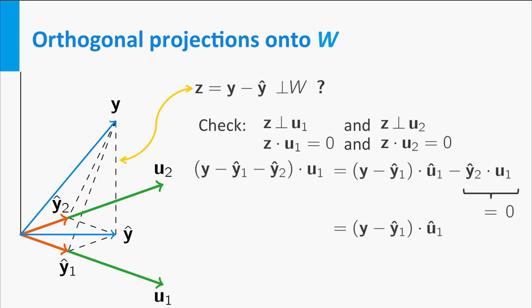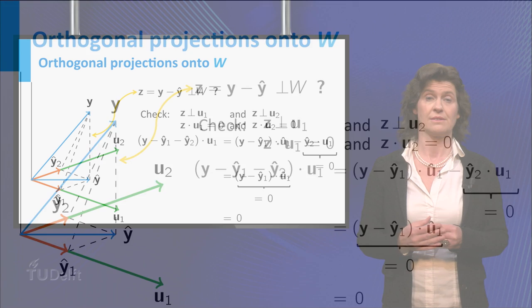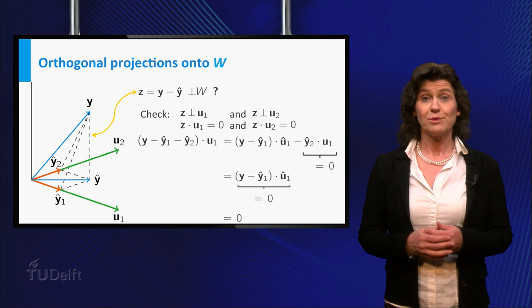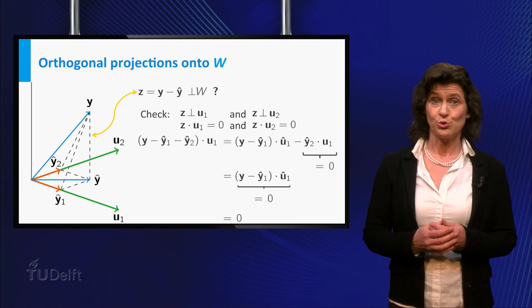And the first term is 0, because the vector Y minus Y1 hat is orthogonal to U1. So you prove that Z has inner product 0 with U1. I guess you immediately believe that this is also true for U2.